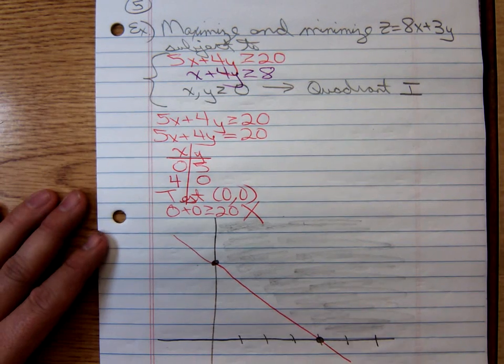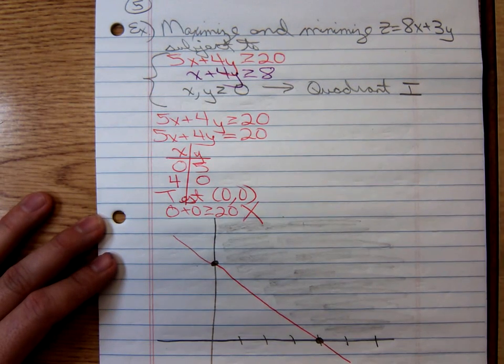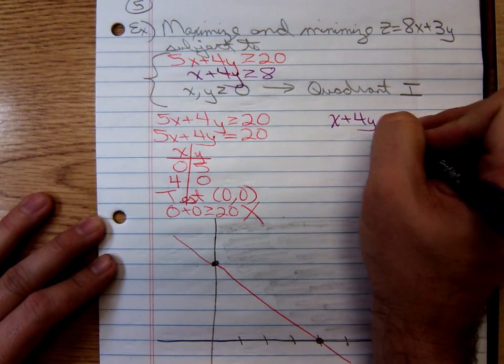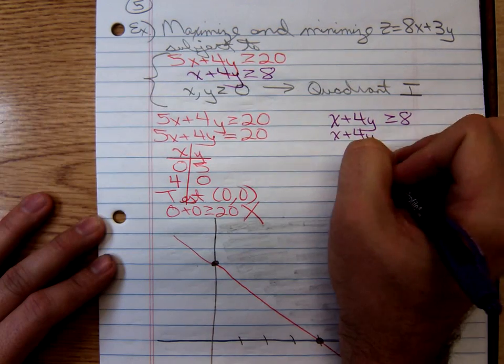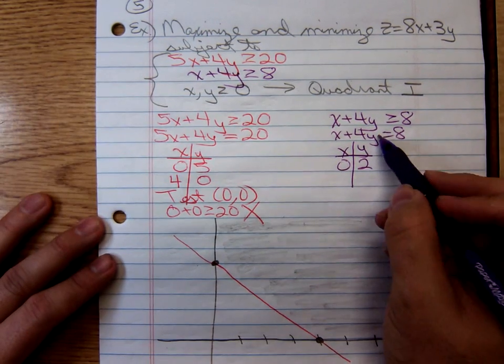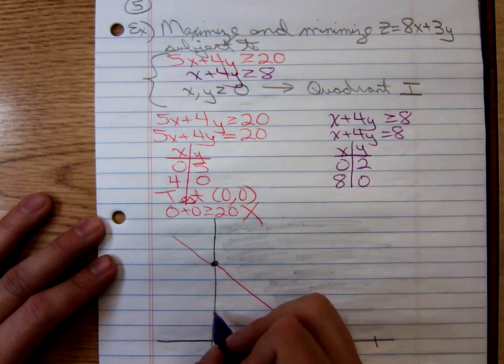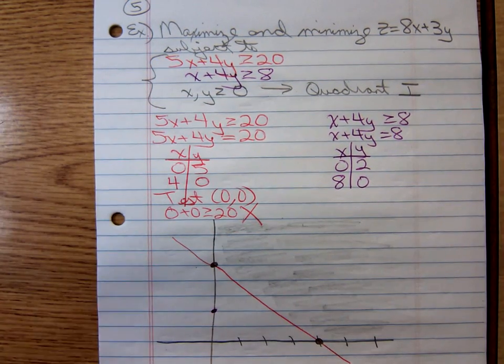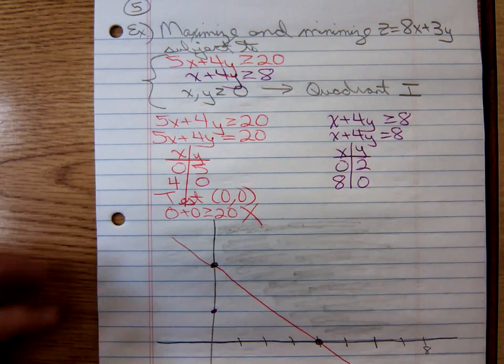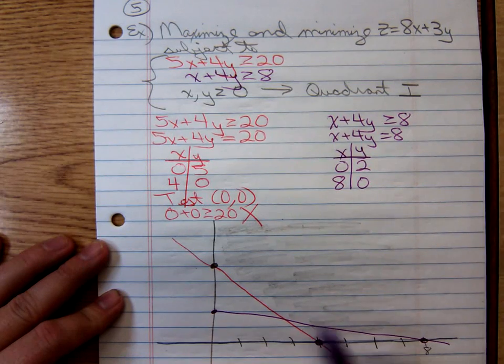Notice we still have to graph the second inequality. Now the second inequality, x plus 4y is greater than or equal to 8. We have to graph the line x plus 4y equals 8. When x is 0, y is 2. When y is 0, x is 8. So we have 0, 2 and 8, 0. 1, 2, 3, 4, 5, 6, got to extend it, 7, 8, right there. Draw the boundary line. There it is.